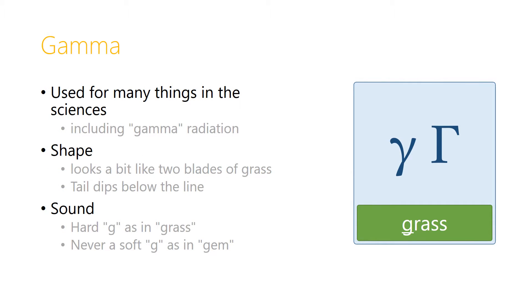The first of these is gamma. This is used for many things in the sciences, including gamma radiation, and the shape in the lowercase looks a little bit like two blades of grass coming up from one root. The tail dips below the line.